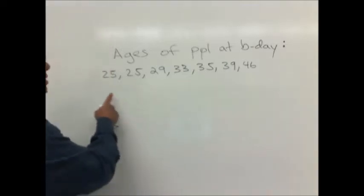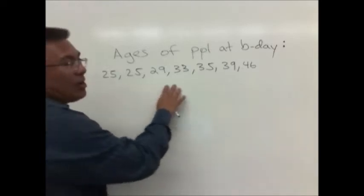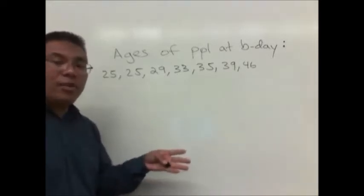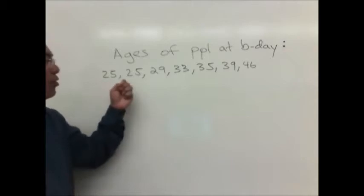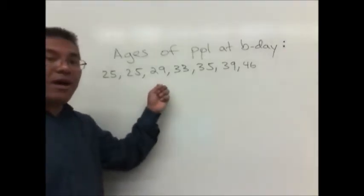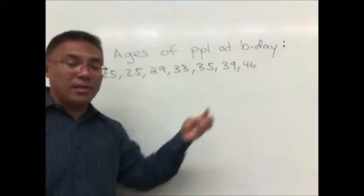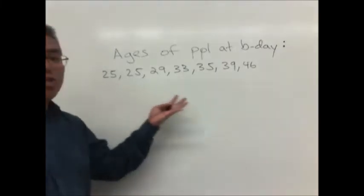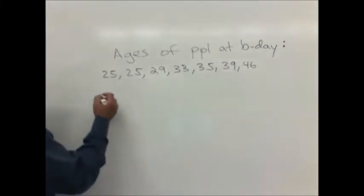You should see on the practice final a question that asks for the measures of center for the ages of people that were at some birthday party. So we did a survey of people at a birthday party and found out somebody was 25, another person was 25, somebody else was 29, 33, 35, 39, and 46. We're looking for the different measures of center, meaning what's the average age of a person at the party. And we said there are four ways to do that.